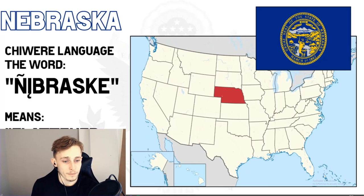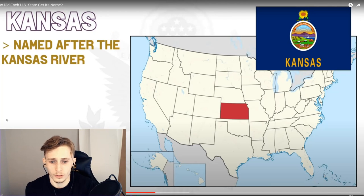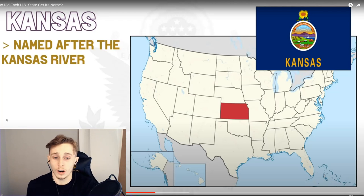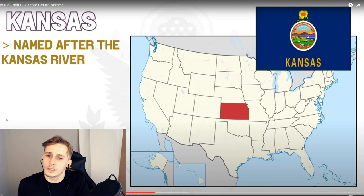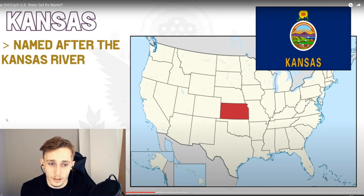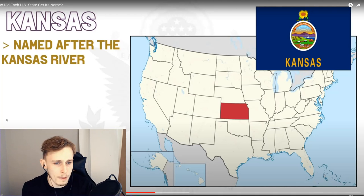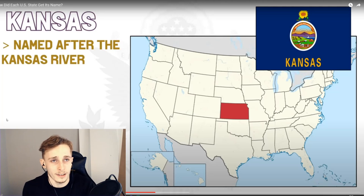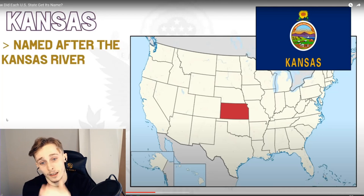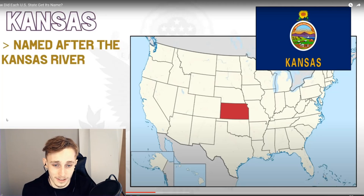Nebraska's name comes from the native Chiwere language, specifically the word 'nebrask,' literally meaning 'flattened water.' It was first the name of the Nebraska River, then the territory, then the state. I was not aware so many states had a native origin in their names — it shows the historical meaning. Kansas is named after the Kansas River, which was named after the Kansas Native Americans who lived along its banks. The tribe's name is often said to mean 'people of the south wind,' although that was probably not the original meaning.